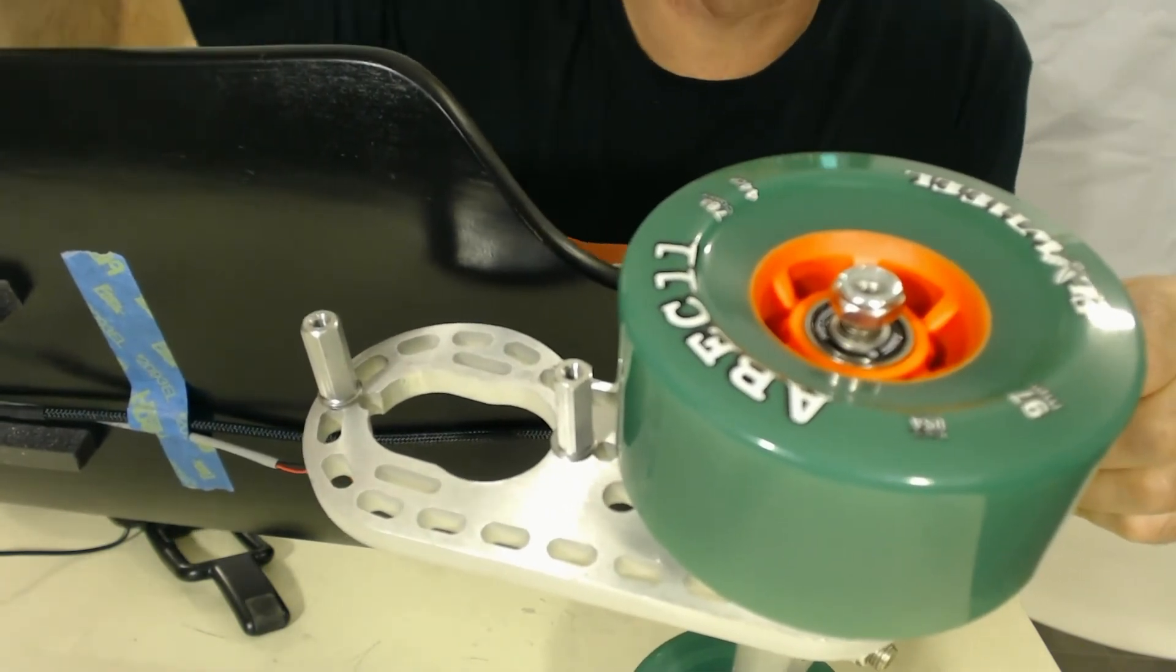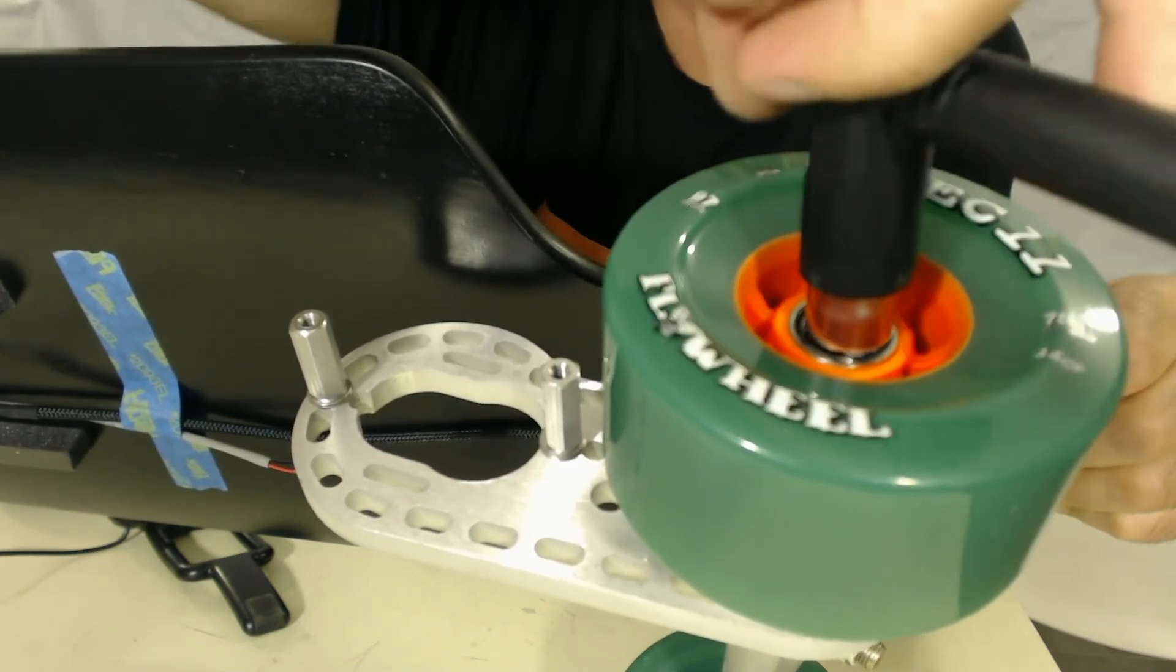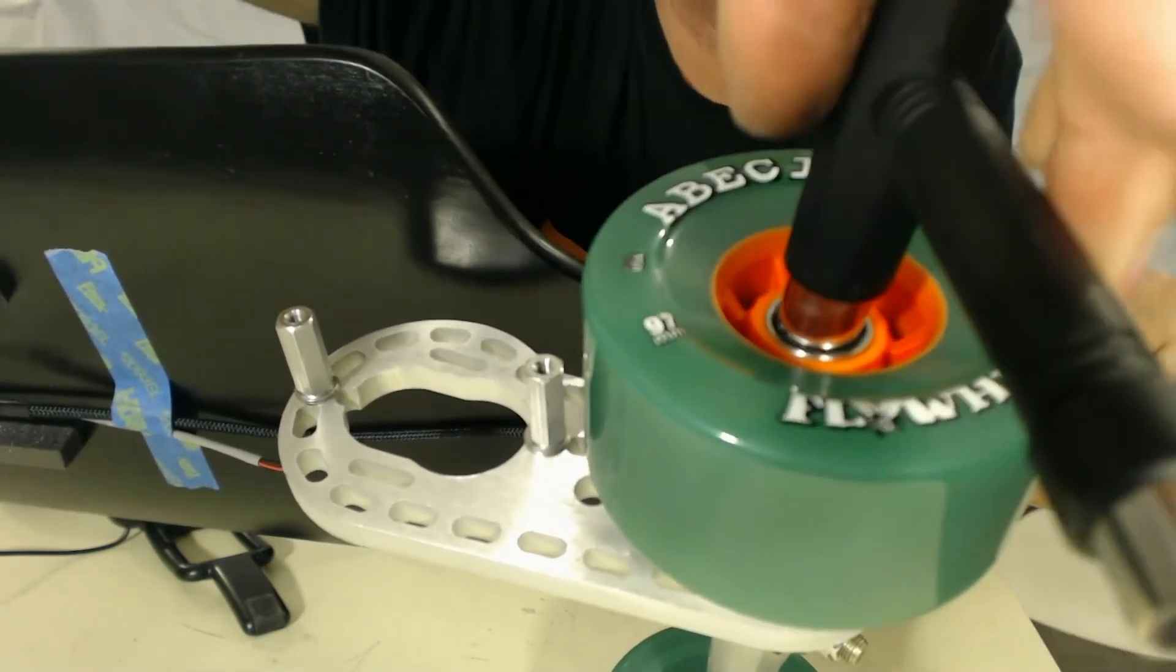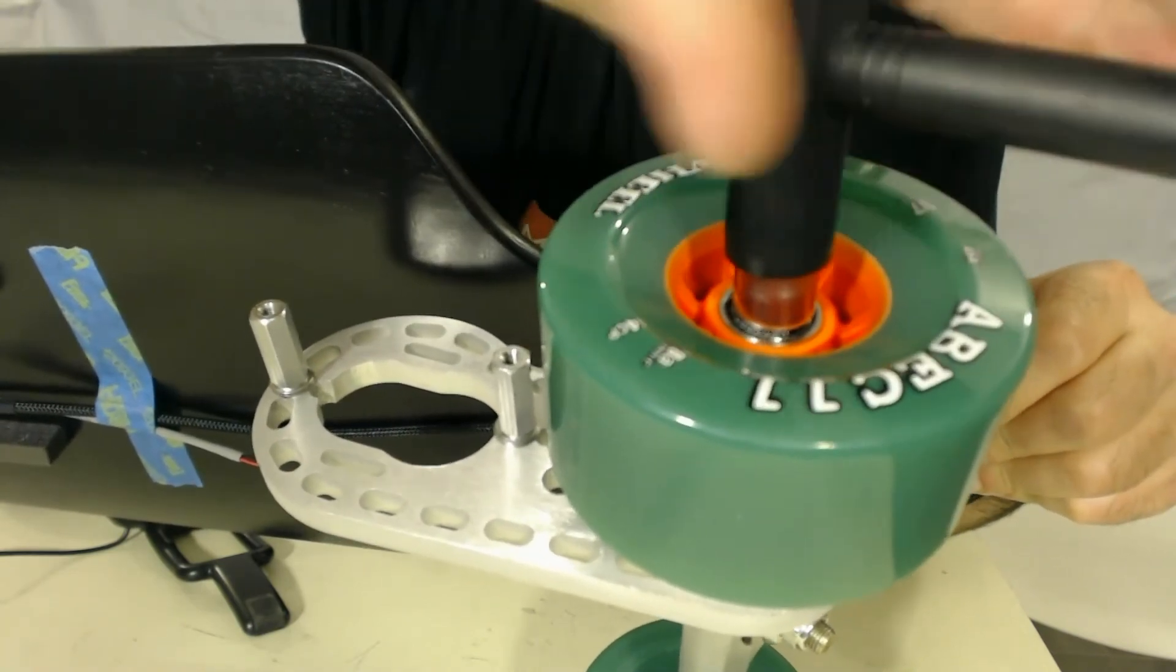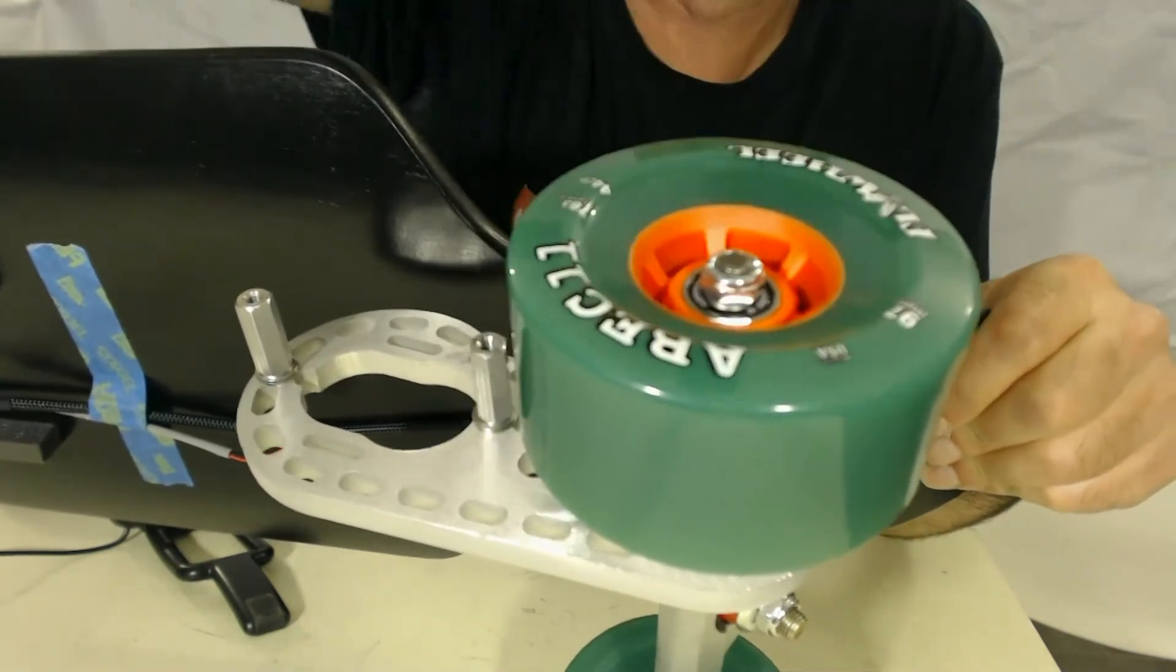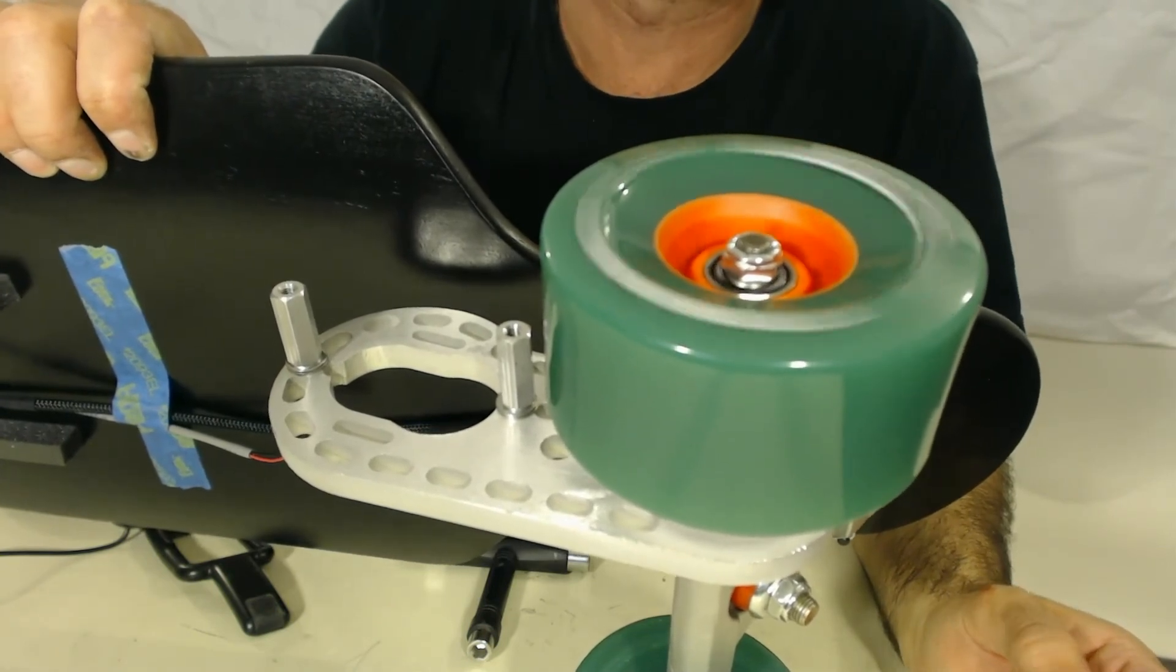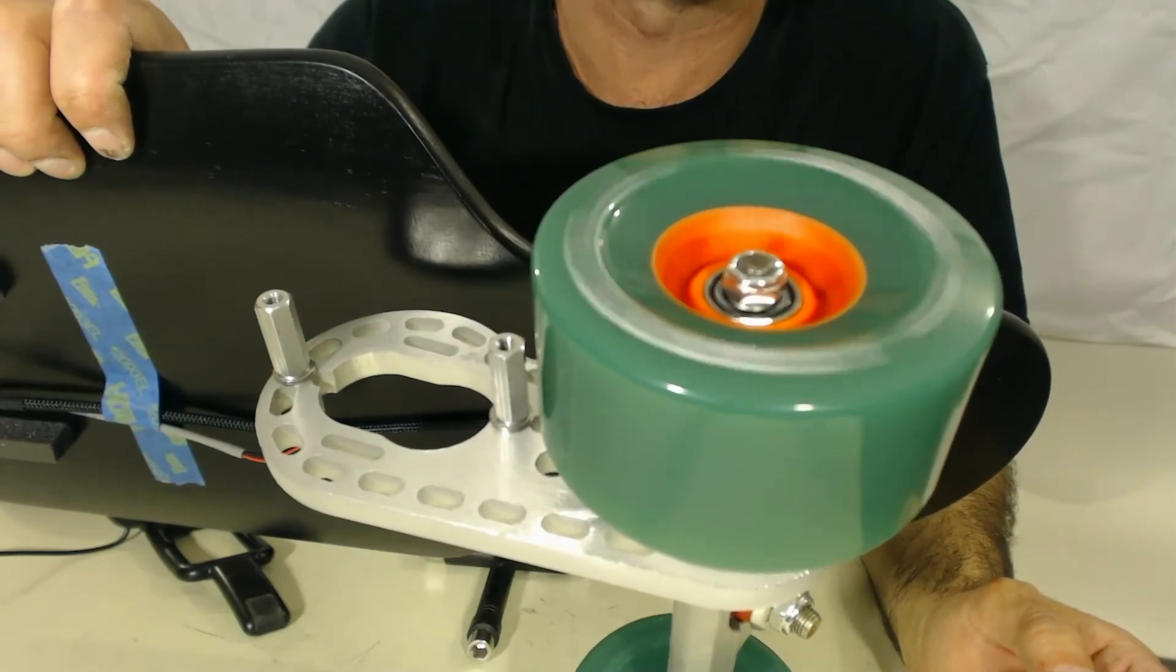So now here's where the beauty of the bearing spacer comes in. You just tighten it. Now you don't need to worry about over tightening or having it too loose. You just tighten it basically until it becomes impossible to tighten anymore. And the bearing spacer will prevent you from over tightening. And it'll have a tiny bit of slop. But watch. You just spin it. And the bearing spacer is doing its job. It's basically keeping you from over compressing the bearings to the point where they get squished and then don't turn so well.